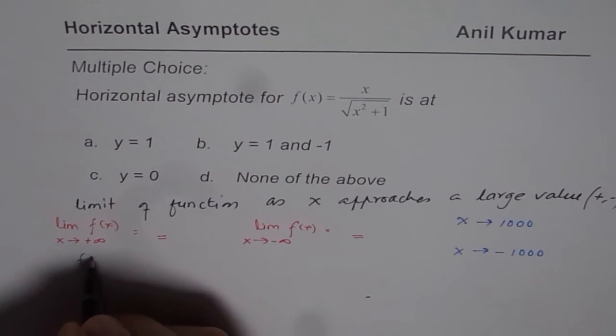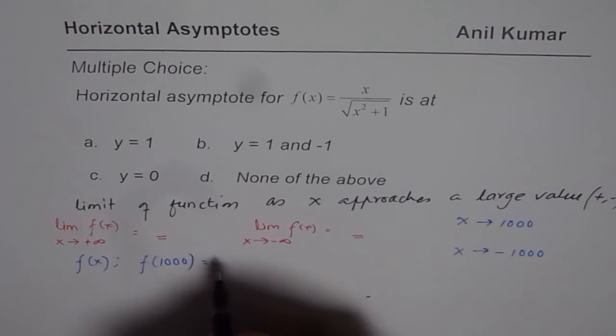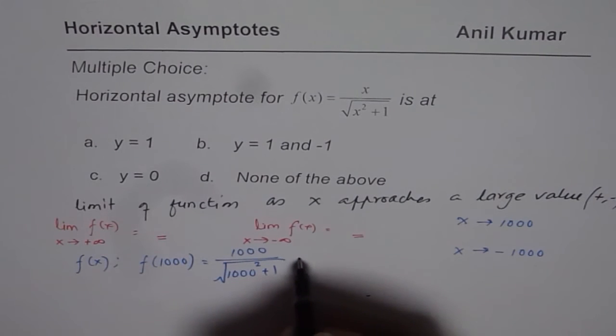So let us find what is f(x). Rather I should write f(1000). So if I write 1000 here, I get 1000 divided by square root of 1000 squared plus 1. So square, this number is square root of 1000.